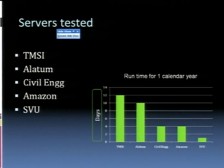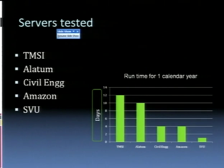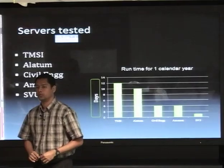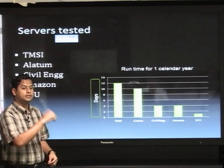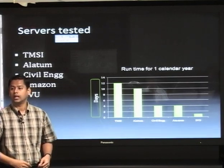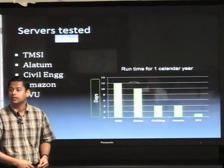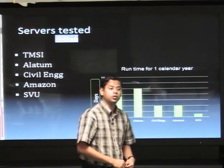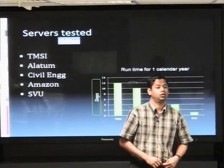In this exercise, we have tested several servers because of the timeline. TMSI, where I come from, has some in-house servers — a very small mini cluster of about 16 nodes. We have Alatom, a general service provider in Singapore. We have a cluster set up in the civil engineering department, again a 16-node cluster. Amazon — we all know Amazon — they are also service providers. We initially tried Amazon Singapore, but that was totally not meeting our computation demands, so they recommended us to log on to the Amazon US northeast instead.